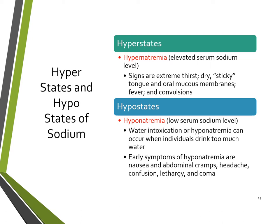Marathon runners can become hyponatremic by drinking too much water without replacing electrolytes. Before Gatorade stations were common in races, runners would carry a little packet of salt to take with their water cups to prevent hyponatremia. Hyponatremia can also develop when sodium losses exceed water losses, such as when taking certain medications, though this form is generally less uncomfortable.